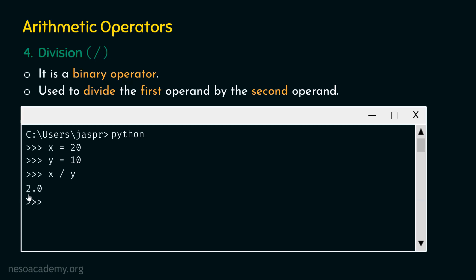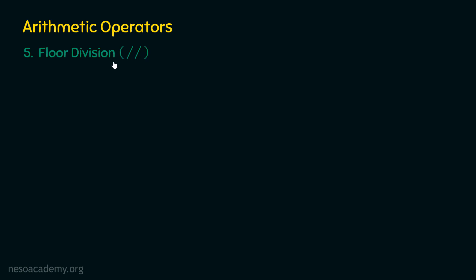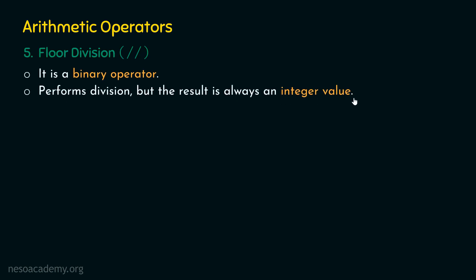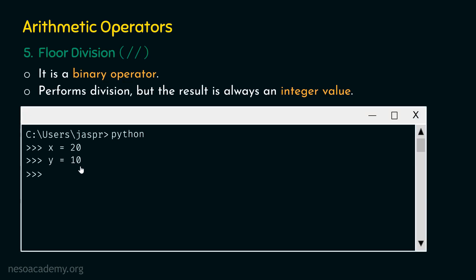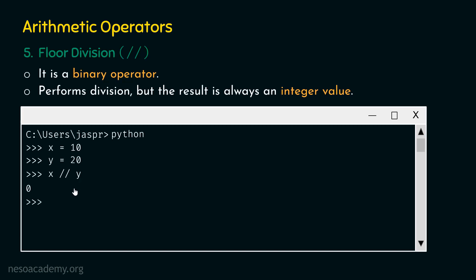Sometimes the requirement is to get an integer value. For this, Python provides the floor division operator, represented by two forward slashes. It is also a binary operator and performs division, but the result is always an integer. For example, with x as twenty and y as ten, x floor-divided by y gives us two. If we switch so x is ten and y is twenty, floor division gives us zero — it truncates the point five — because floor division always returns an integer value.